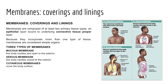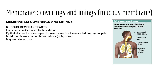Having covered the four tissue types — epithelial, connective, muscular, and nervous — the textbook closes the chapter with a discussion of membranes, the coverings and linings of the body. Membranes are flat sheets of pliable tissue composed of an epithelial layer and an underlying connective tissue layer. Mucous membranes line body cavities open to the exterior, including the digestive, respiratory, reproductive, and most of the urinary tract.